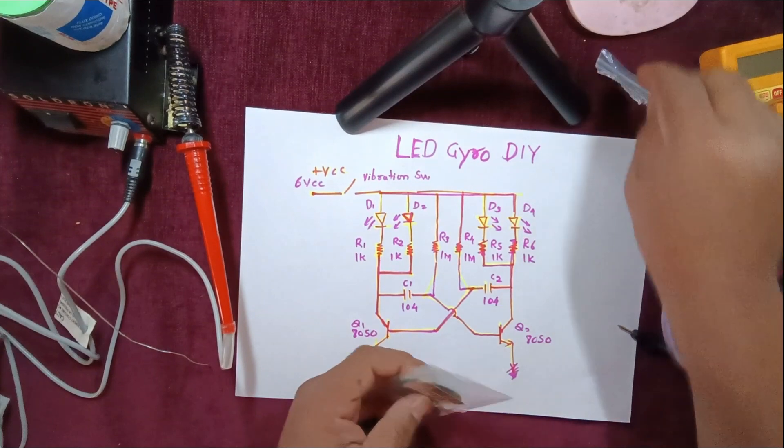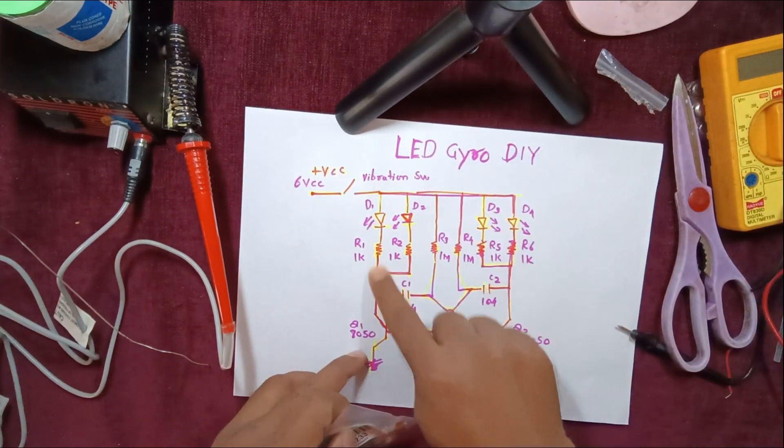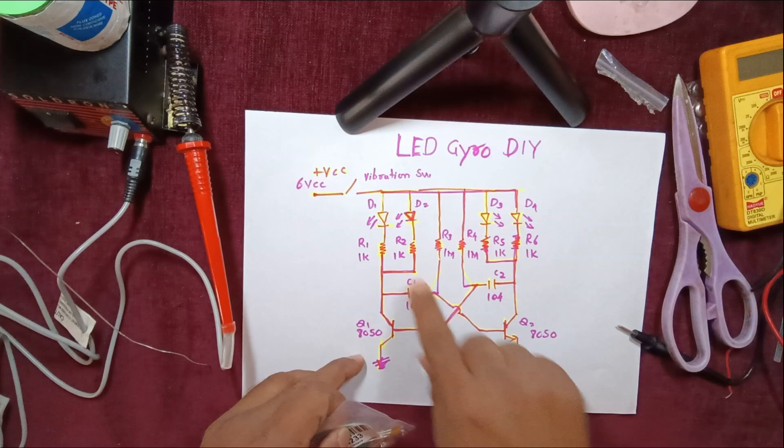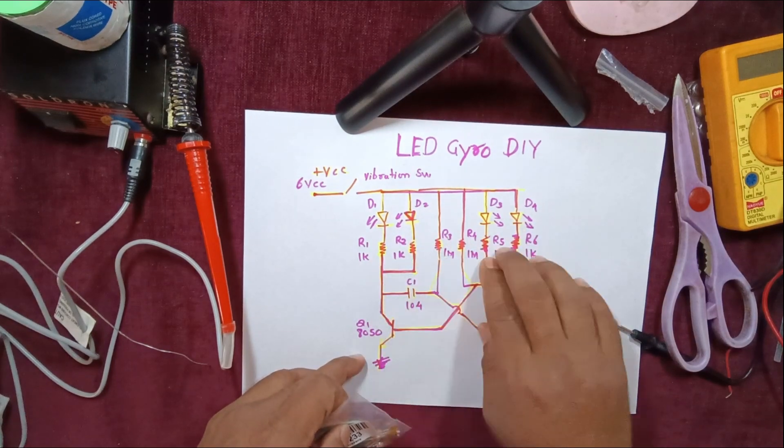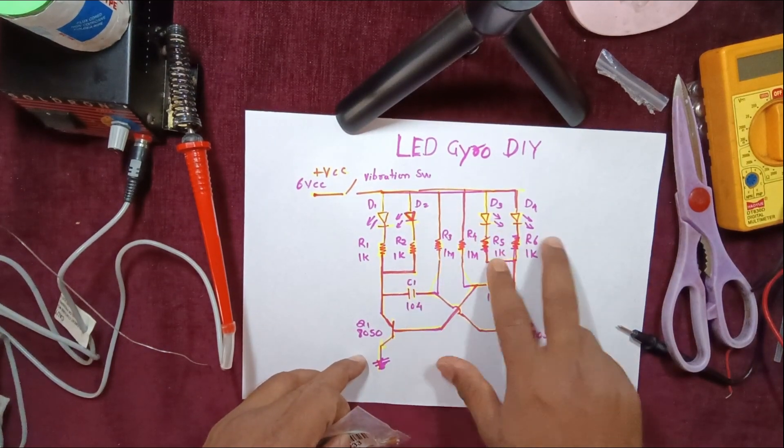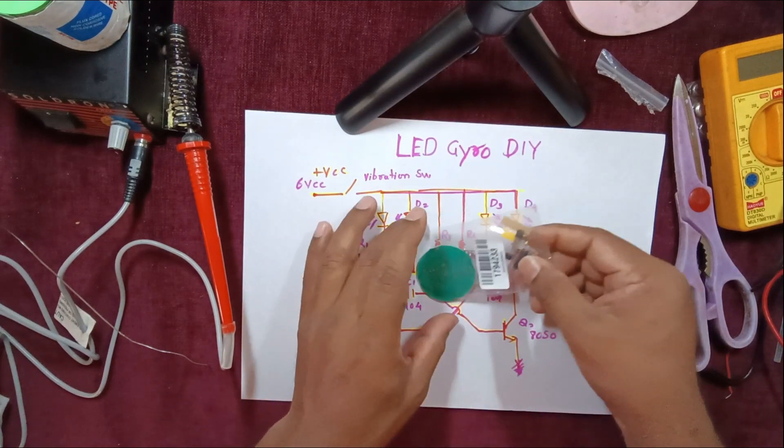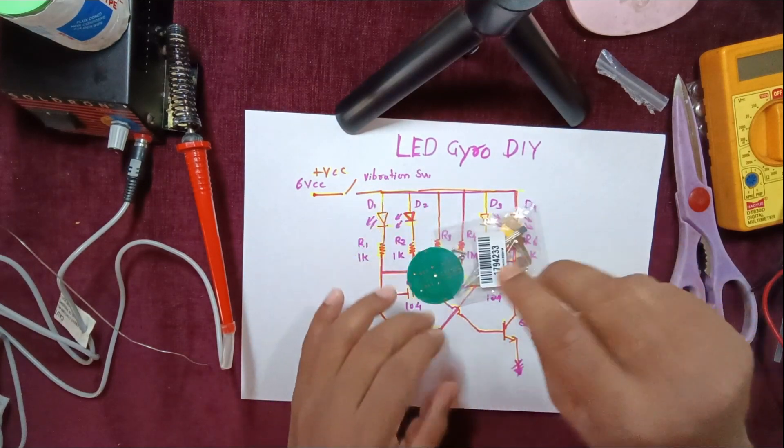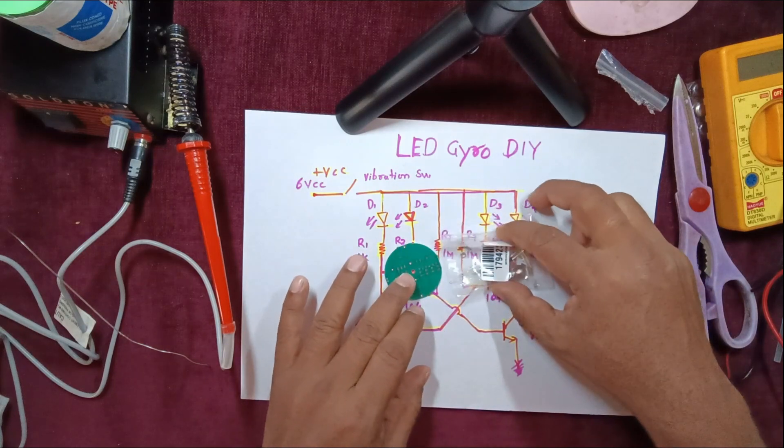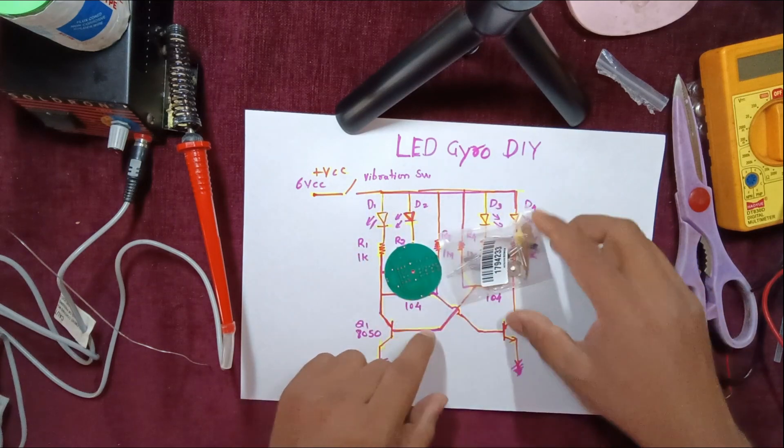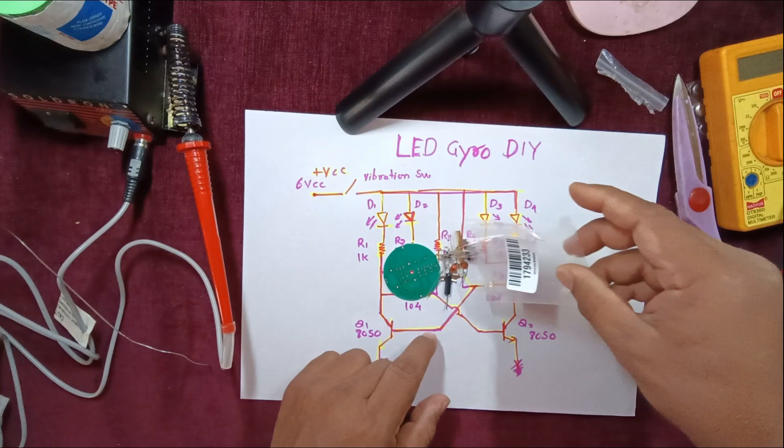Basically the circuit on the gyro is an astable multivibrator which has got four LEDs, six resistors, two transistors, two capacitors, and most importantly one vibrator switch. When there is centrifugal force on the LED gyro, the vibrator switch gets activated and it will turn on the circuitry.